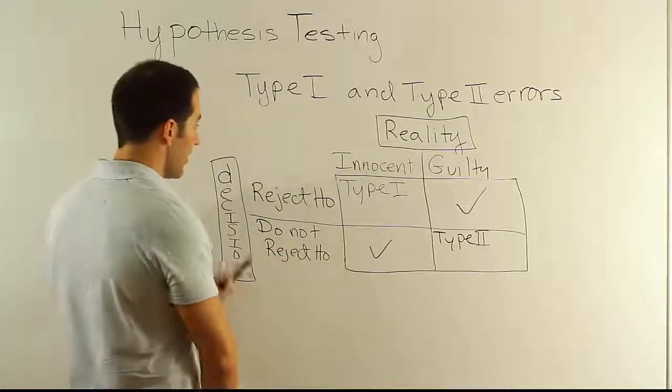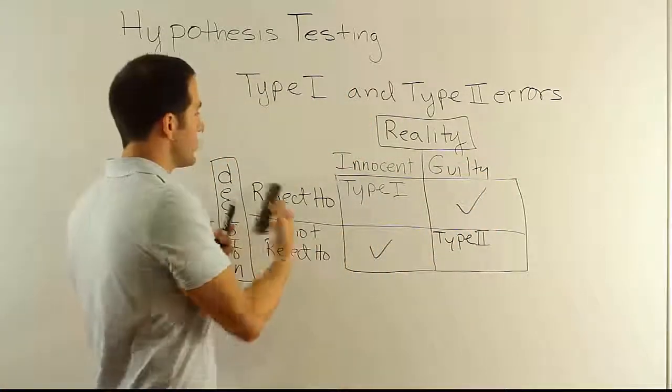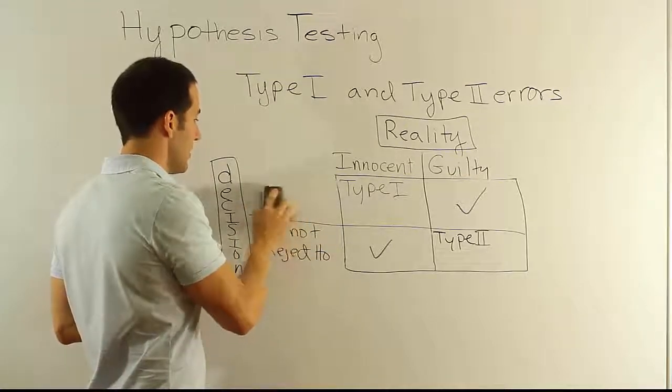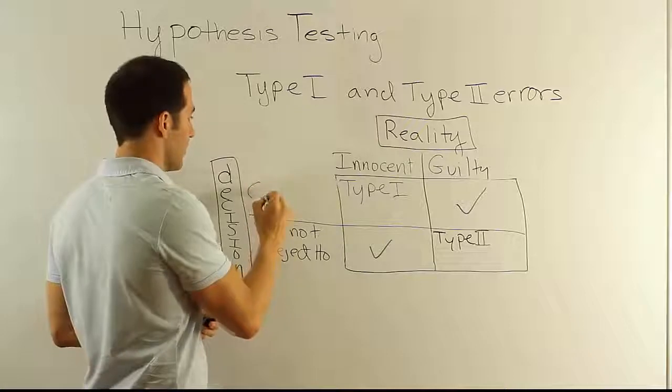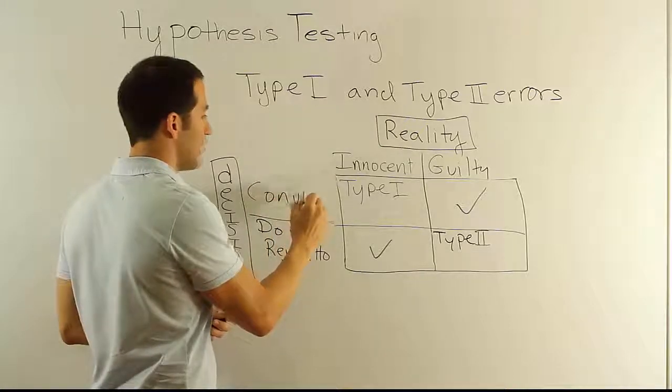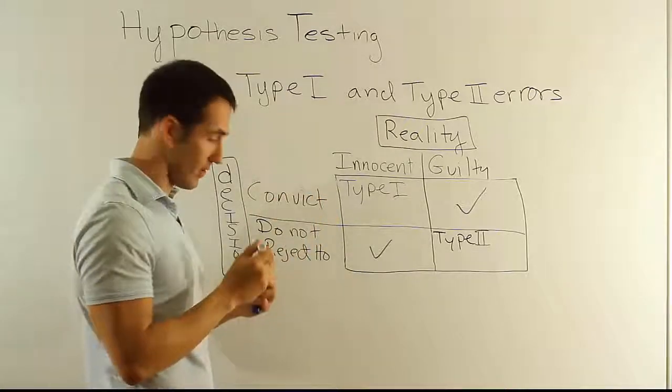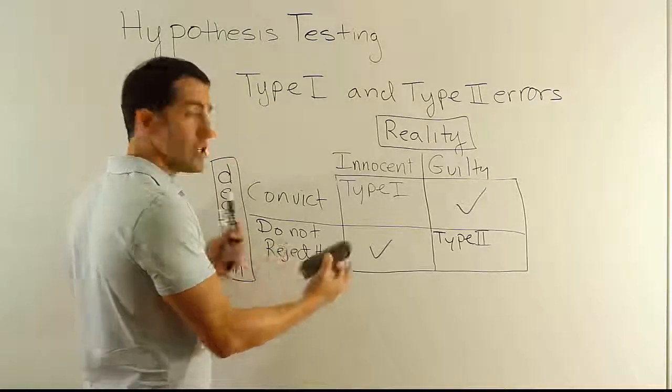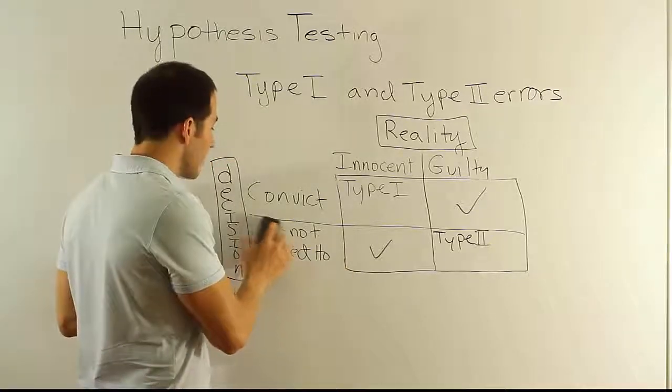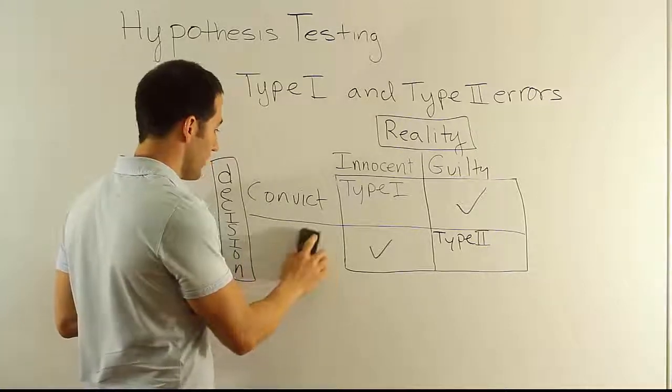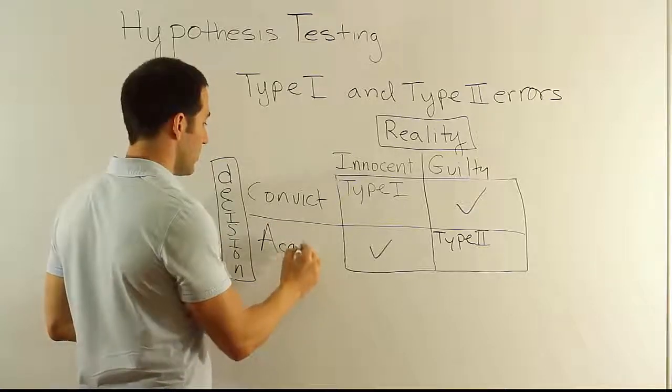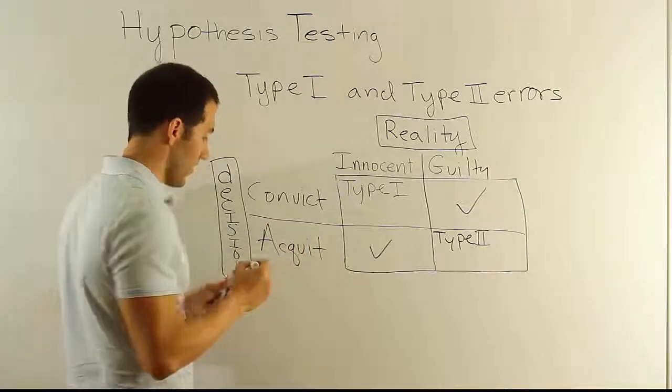Okay, now from there, if you reject H0, it means you reject their innocence. That would be the same as saying you convict them. So you get a conviction there. That would be the jury's decision to convict. And then we finally have do not reject H0. This means you do not reject their innocence. This would mean you basically acquit them of the crime. So you have an acquittal.